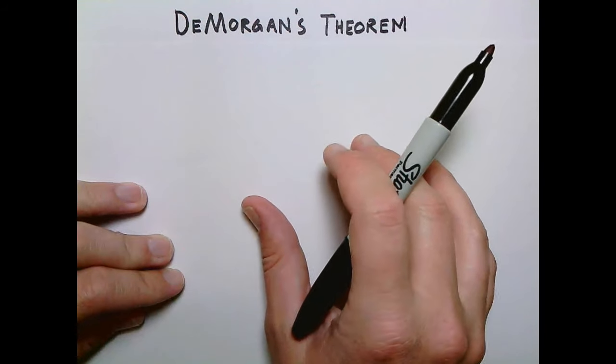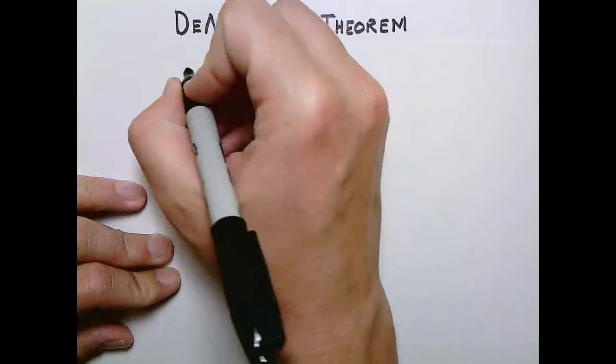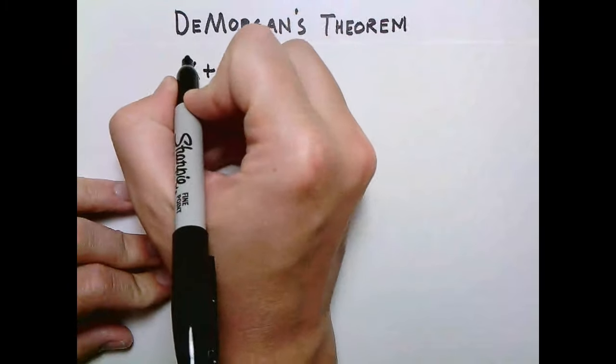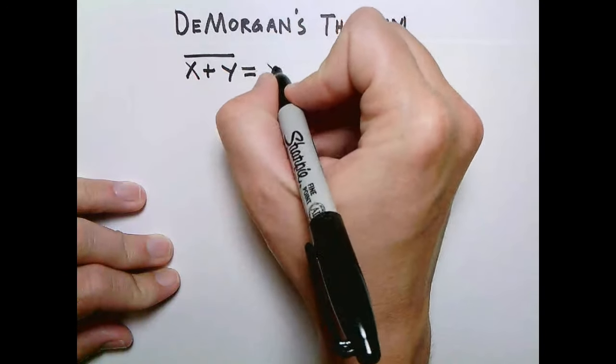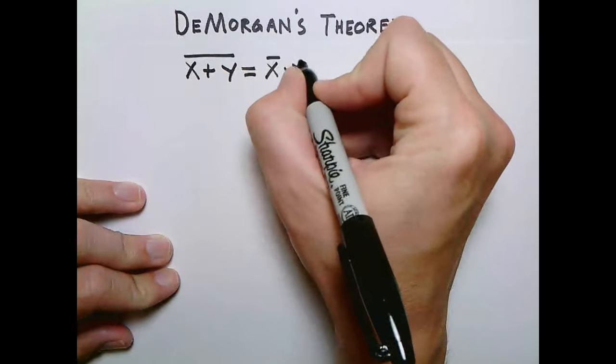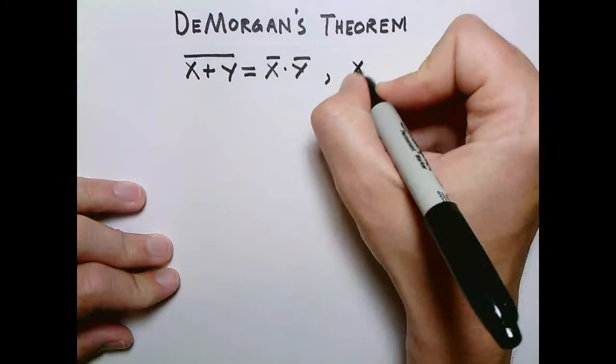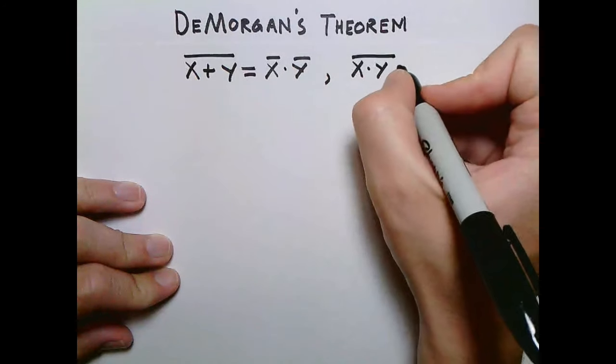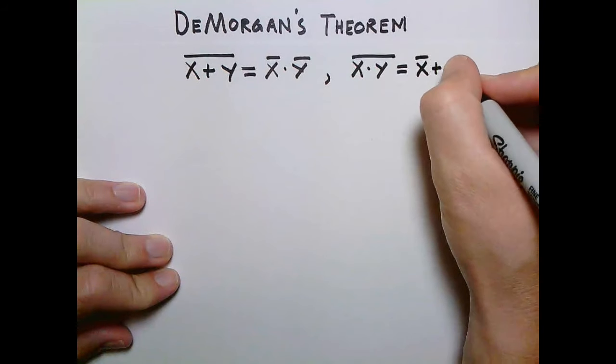So real quick, let's just go through what those identities are. It comes in two parts. There's this thing that says x or y, that whole value knotted, so not x or y, is equal to not x and not y. And the value not x and y is equal to not x or y.